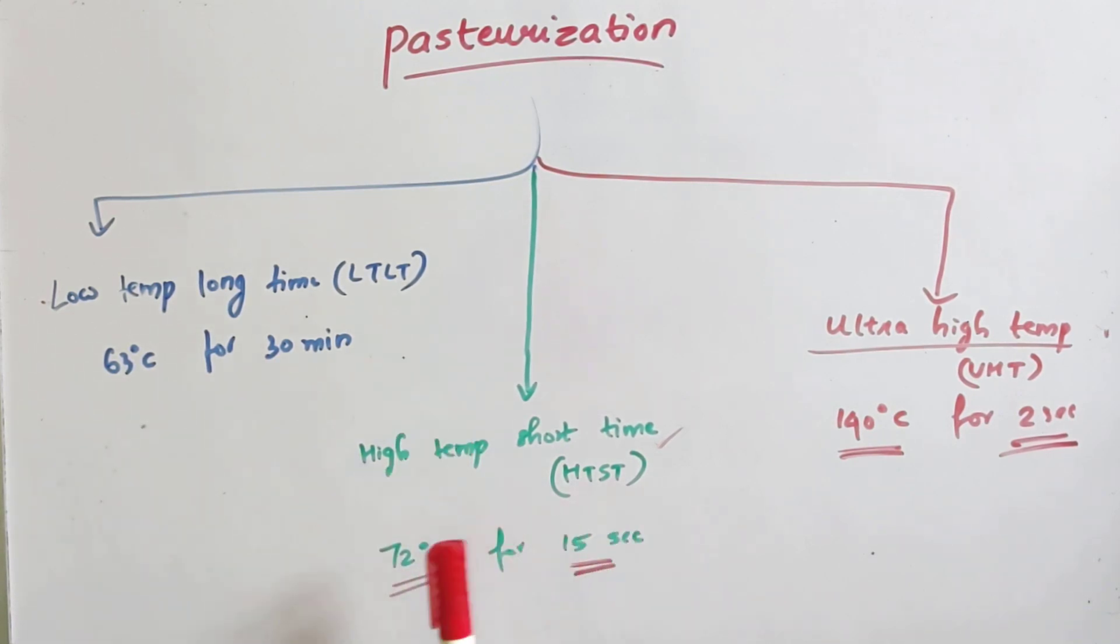Second one is HTST, that is high temperature short time pasteurization. Obviously, the product is heated at a high temperature, 72 degrees Celsius for a short period of time, that is for 15 seconds.